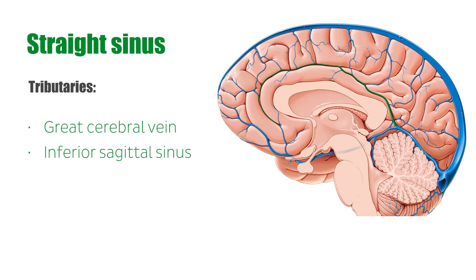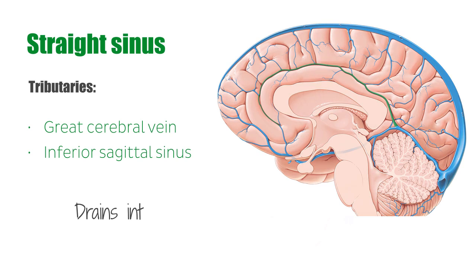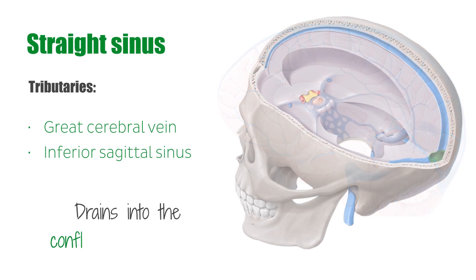The straight sinus drains into the confluence of sinuses. The confluence of sinuses, shown in green, is formed by the joining of the straight sinus, the superior sagittal sinus, and the occipital sinus.